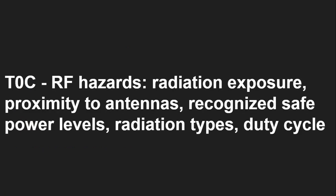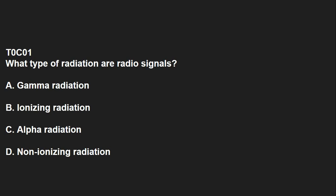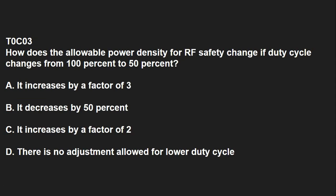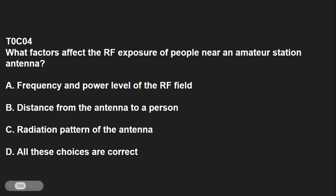T0C covers RF hazards: radiation exposure, proximity to antennas, recognized safe power levels, radiation types, and duty cycles. T0C01: What type of radiation are radio signals? That is non-ionizing radiation. T0C02: At which of the following frequencies does maximum permissible exposure have the lowest value? That's 50 MHz. T0C03: How does the allowable power density of RF safety change if duty cycle changes from 100% to 50%? It increases by a factor of 2. T0C04: What factors affect the RF exposure of people near an amateur station antenna? Frequency and power level of the RF field, distance from the antenna to a person, and radiation pattern of the antenna — all of those are correct.